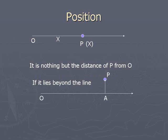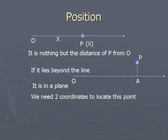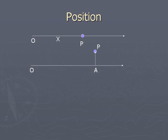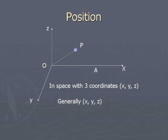Instead of a line, if the point lies beyond the line, we say the point is in a plane. When it is in a plane, we require two coordinates to locate this point. One is O to A, called the x-coordinate, and A to P distance is the y-coordinate. With x and y coordinates we can locate the point P in a plane.